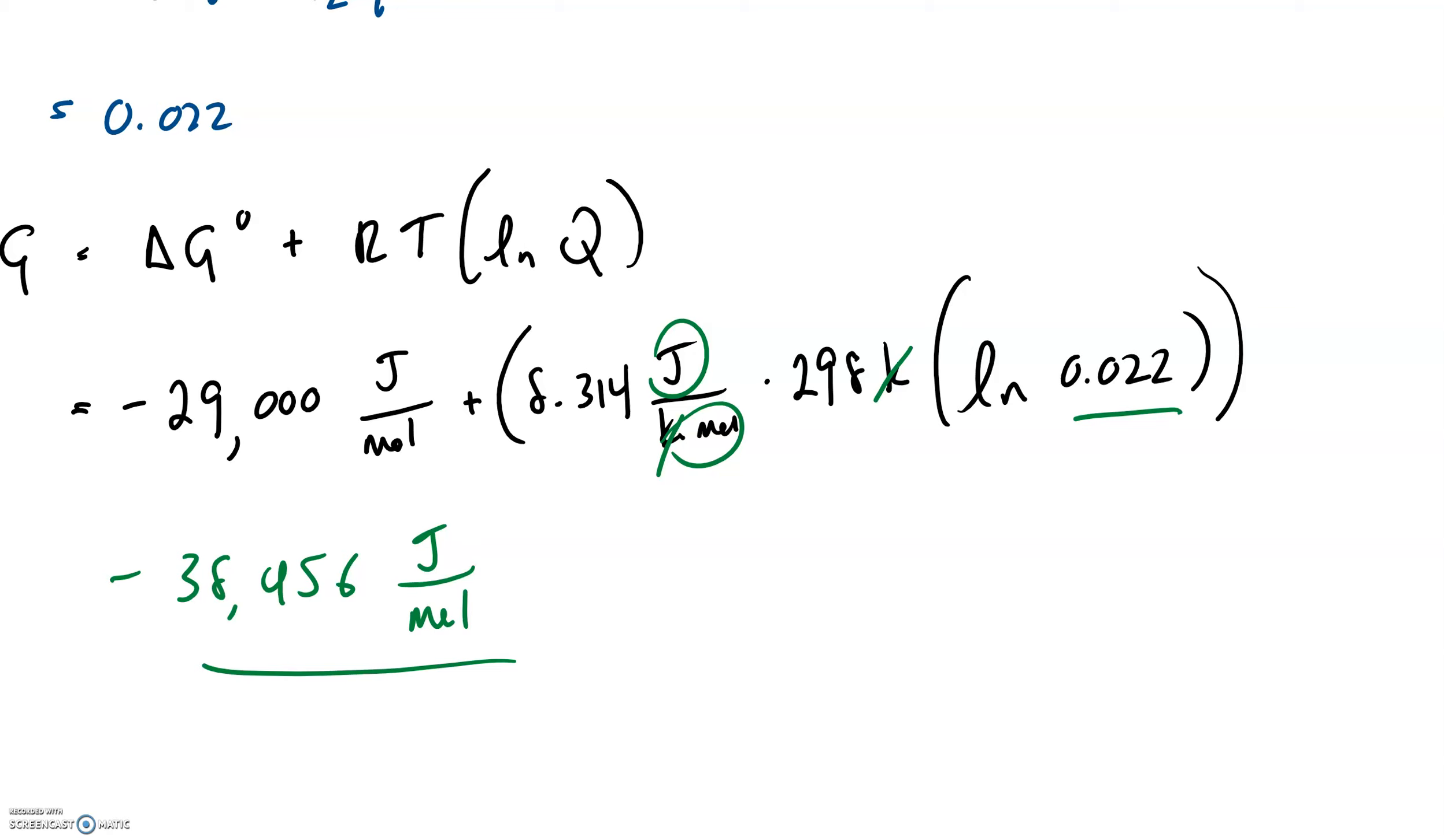That's all you got to do. Make sure you have appendix 4 so you can look up your original delta G's if you have to. And don't forget to write your equilibrium expression to find Q. See you guys later.